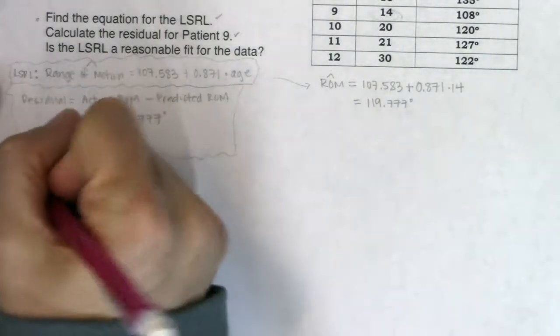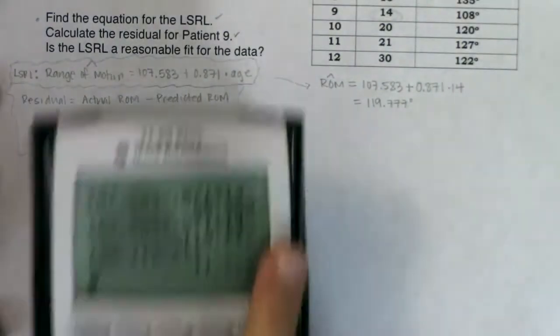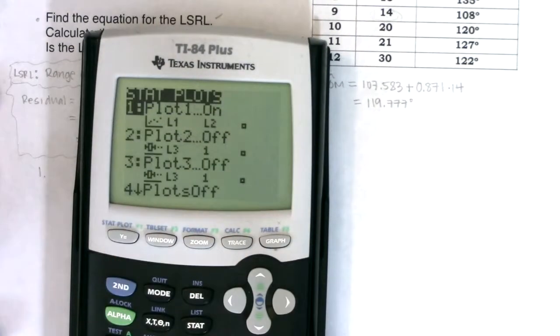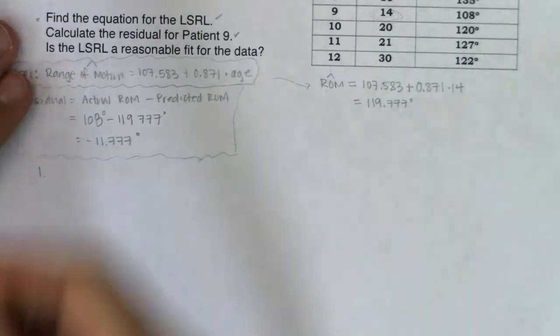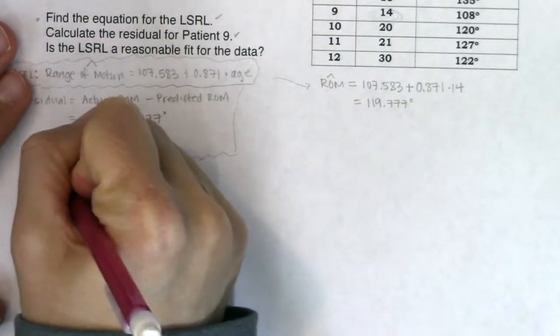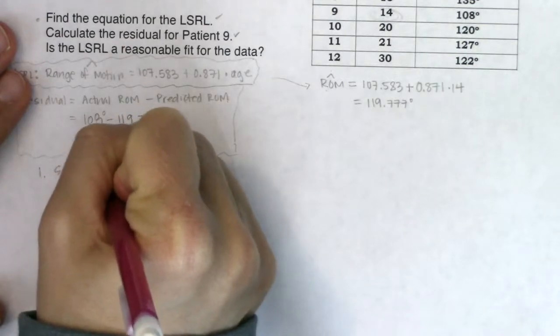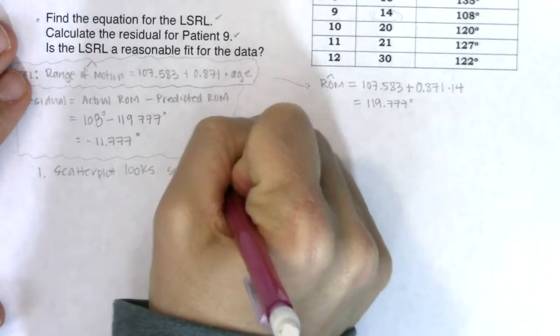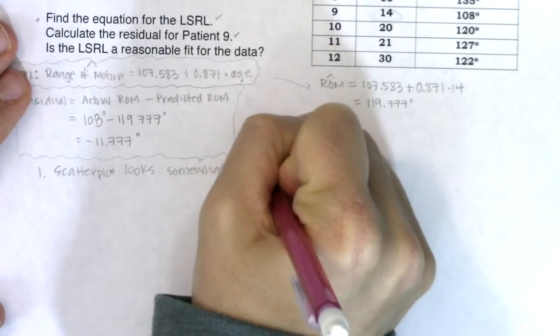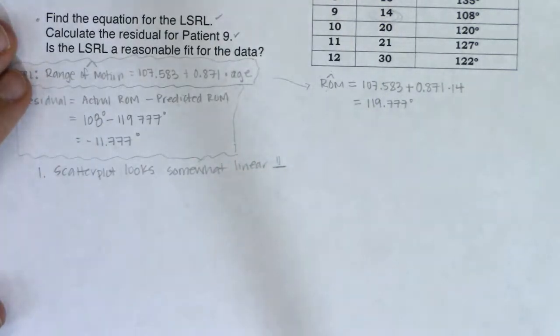Let's scooch this back up so I can start to address this problem. I still have my scatter plot on. So as I look at this, I would say the scatter plot looks somewhat linear. It's not great and it's not bad. It's in the middle somewhere. It's meh is what I would say. So I would say scatter plot looks somewhat linear. I'm not going to give my happy face or sad face. I'm just going to give a middle face.